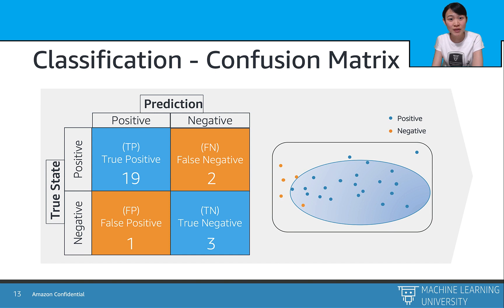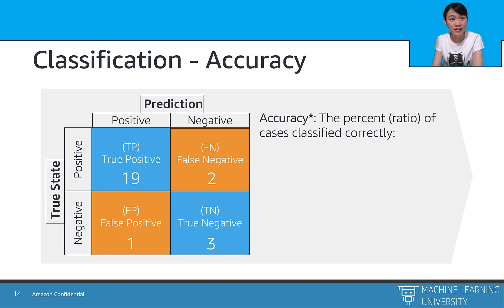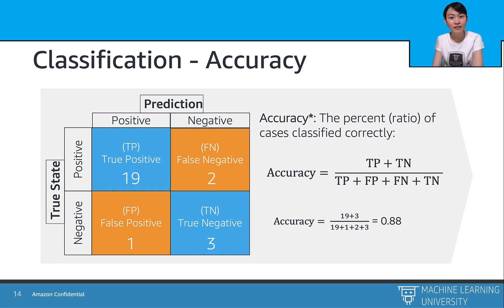Now, with confusion matrix, we can start evaluating the classification problem with the following matrix. And the first matrix is the accuracy. It means how much percentage of the predictions are correct. Well, the math formula of accuracy can be explained by the sum of true positive and true negative divided by the total sampled number. So in our example, the accuracy can be calculated by 19 plus 3 and then divided by the total sample number, which is 88% of accuracy. So accuracy is between 0 and 1. Ideally, we wish the model has an accuracy as high as possible.